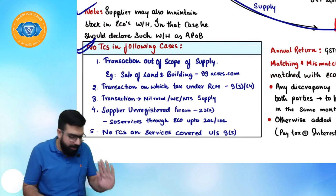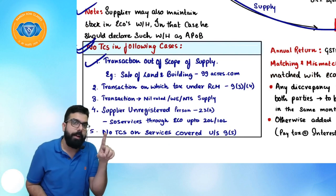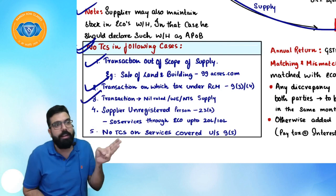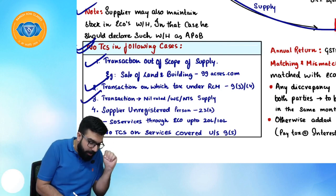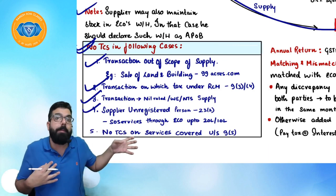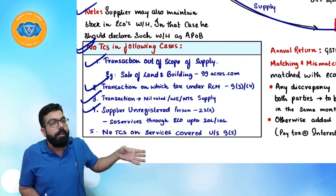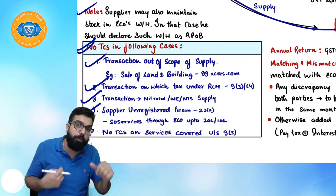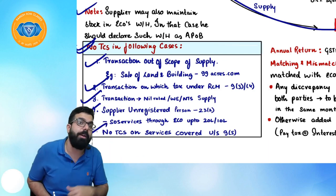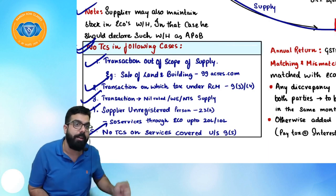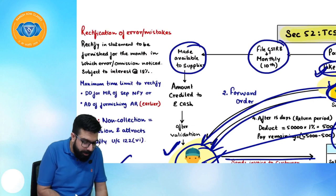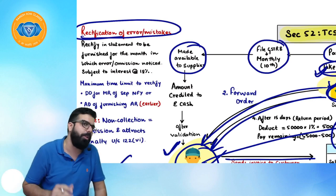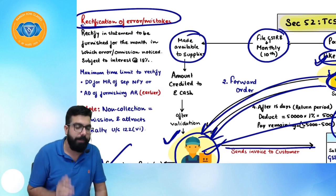TCS is not required when: transactions are out of scope; transactions are taxable under RCM; transactions are nil-rated, exempt, or non-taxable; the supplier supplying through e-commerce is unregistered (not required to register up to ₹20 lakh or ₹10 lakh); and no TCS for services covered under Section 9(5) — housekeeping, accommodation, and transportation. If the e-commerce operator later notices a rectification, it can make the correction in a later month's return, subject to interest at 18% per annum.